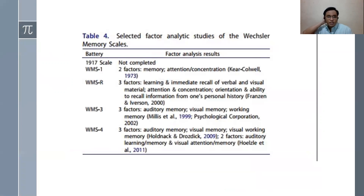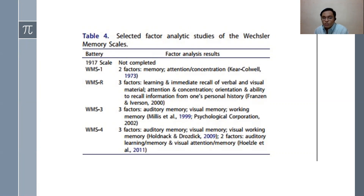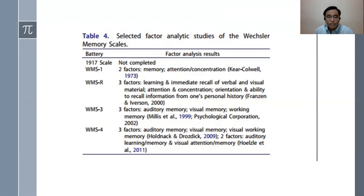For factor analytic studies: in the 1917 scale, factor analysis was not completed as Weschler did not initially give it much attention. WMS 1 had two factors: memory, and attention and concentration. The revised version had three factors: learning and immediate recall of verbal and visual material, attention and concentration, and orientation and ability to recall personal history — introducing delayed memory. WMS 3 had: auditory memory, visual memory, and working memory (short-term). The latest WMS 4 retained three factors — auditory memory, visual memory, visual working memory — and added two more: auditory learning memory and visual attention memory, measuring more memory components with better structure and scoring mechanics than past versions.